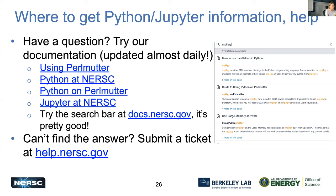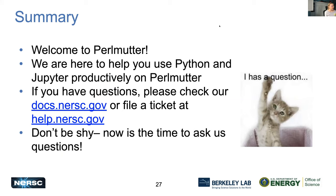To quickly wrap up and point you in a helpful direction: we have a lot of documentation that we've been updating almost daily since Perlmutter was installed. Check out the general Perlmutter page, the Python page covering conda environments, conda channels, and system-specific things, and the Jupyter page. We have a pretty handy search bar so you can type in something like 'MPI for Py' and find what you need quickly. If you can't find what you need in the docs, please submit a ticket — we're very friendly and want to help you get your work done. Welcome — we're here to help you make productive use of this brand new exciting system.